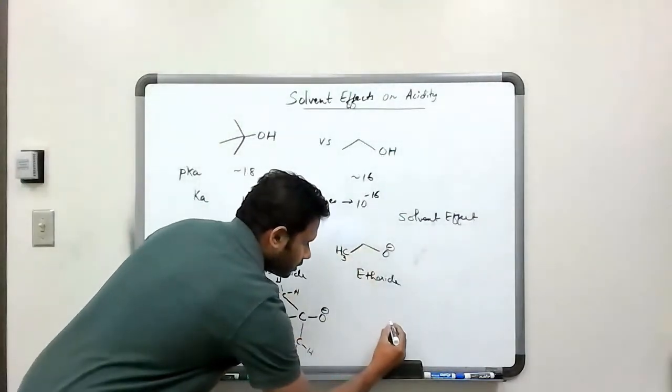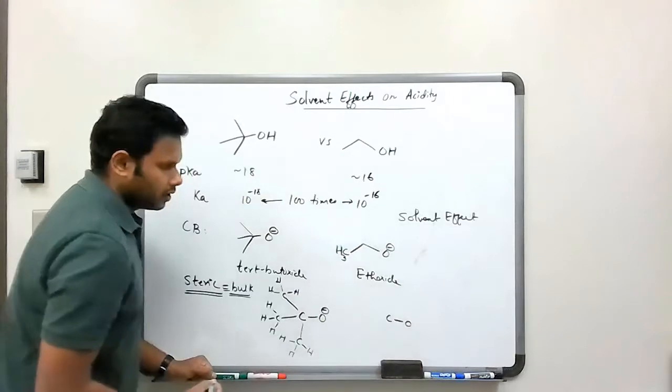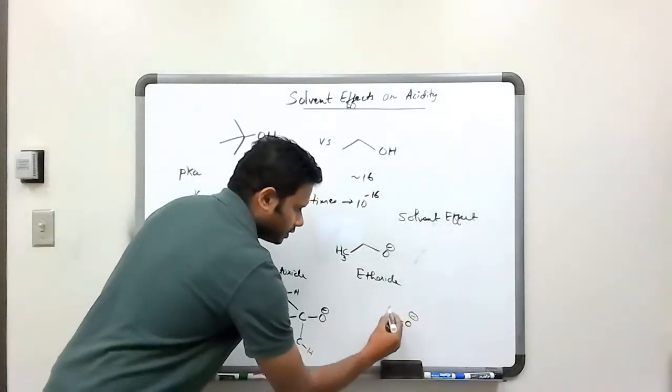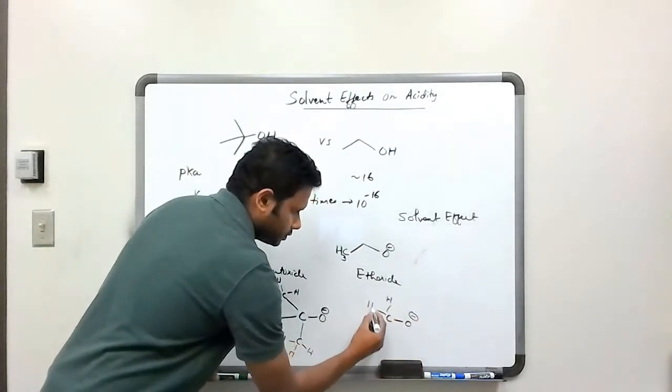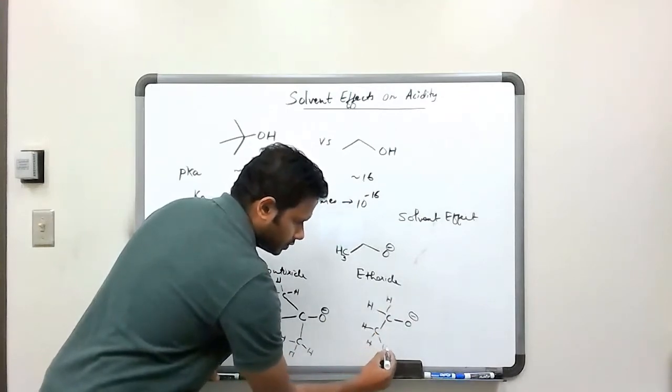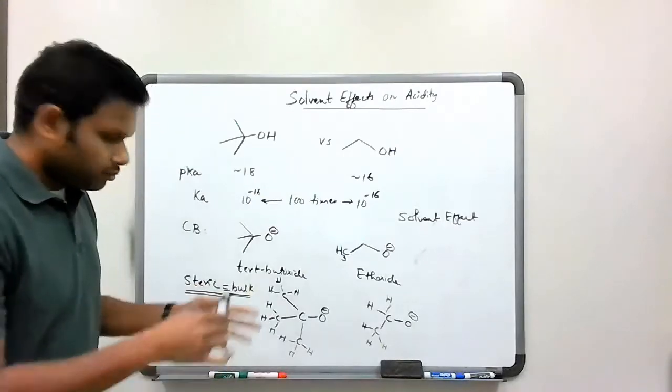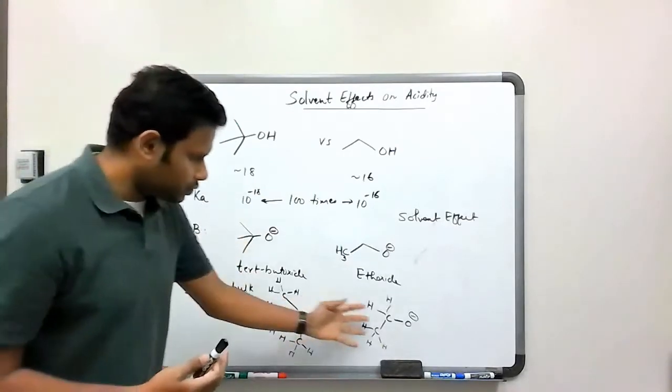Whereas for the other ion, we have oxygen with a minus. This carbon has two hydrogens, this carbon has two hydrogens, and then it has a CH3 on it. So there is a difference in the bulkiness of these two groups.